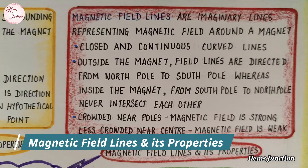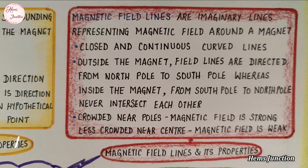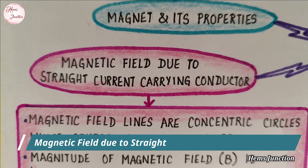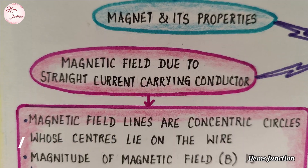Magnetic Field Lines and its properties. Magnetic Field Due to Straight Current Carrying Conductor.